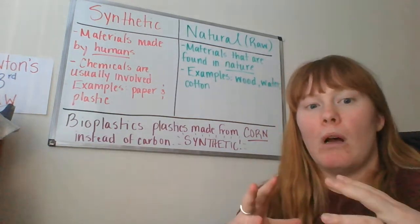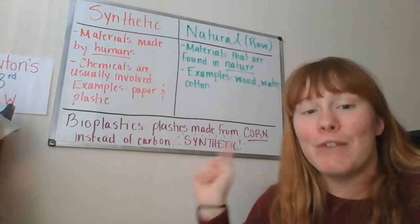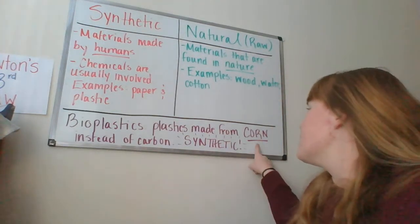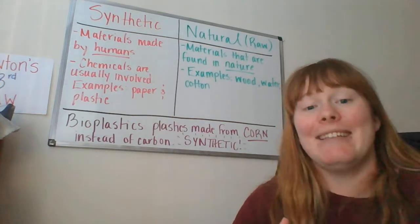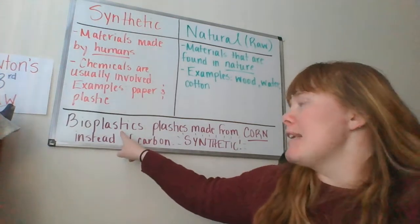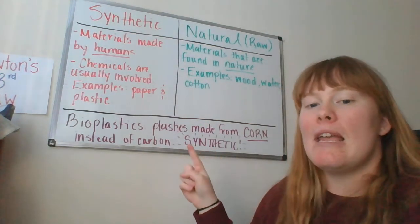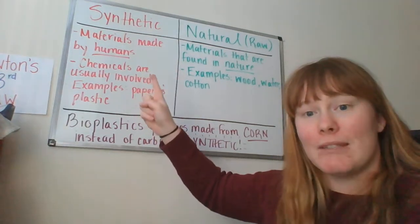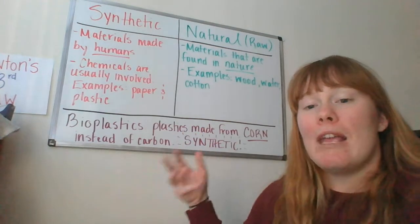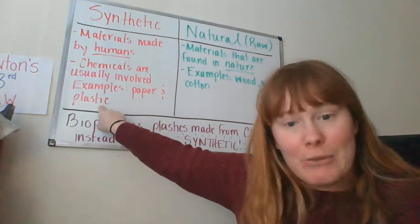It can take over a thousand years for one plastic fork to decompose in a landfill due to how it is created with carbon. Bioplastics try to reduce that amount of time. Bioplastics are plastics made from corn instead of oil, which is a form of carbon. In this case, bioplastics use corn, which still has carbon in it, but it's easier for those molecules to break down. So while bioplastics might be better for the environment because they break down faster, they are still considered synthetic because it is a human process that still involves chemicals. Remember, synthetic does not always mean negative — bioplastics are a synthetic product we are going to look into to show how they can replace our regular one-use plastics that take a thousand years to decompose.